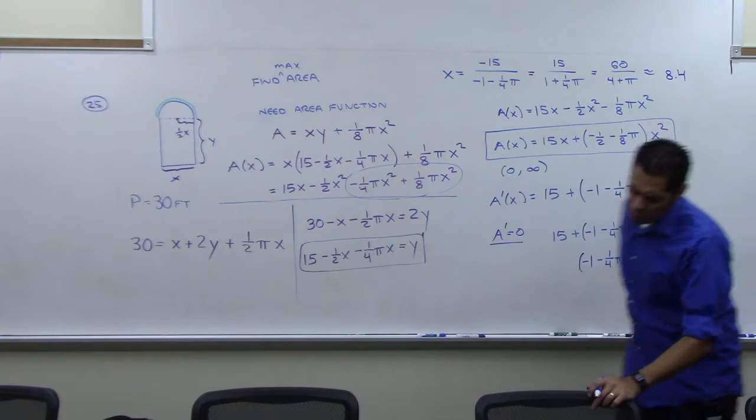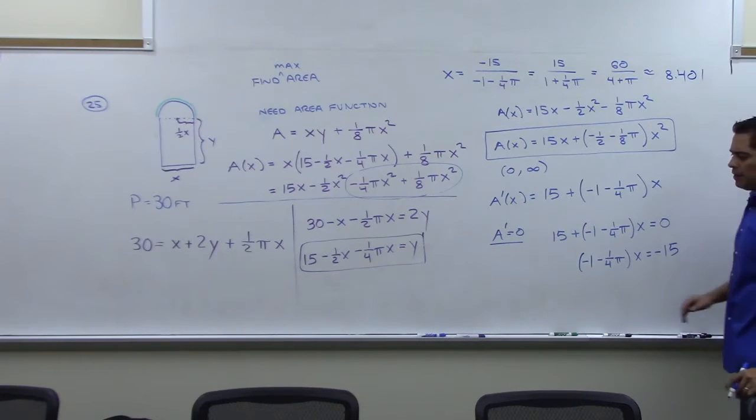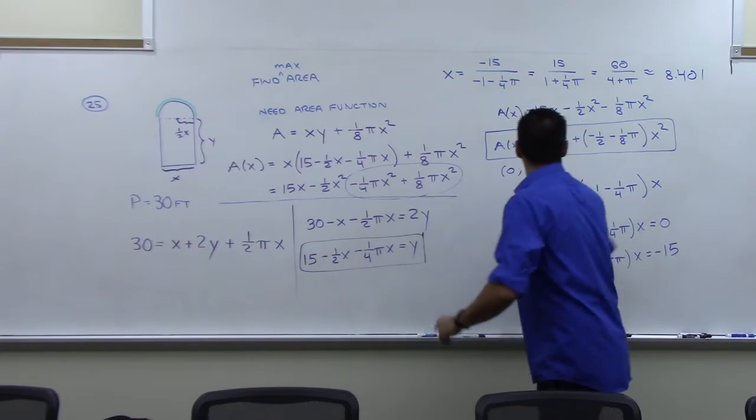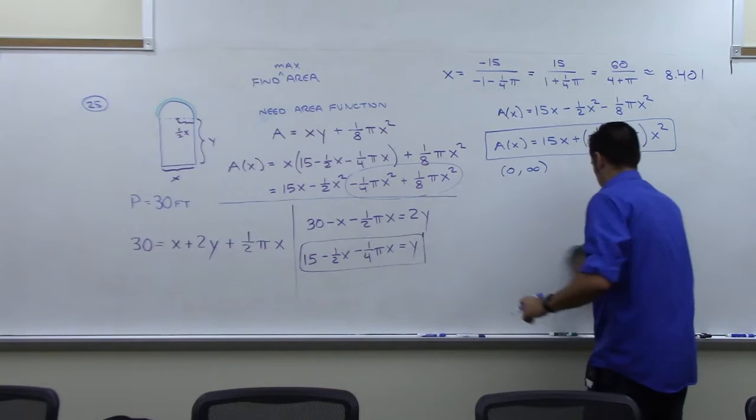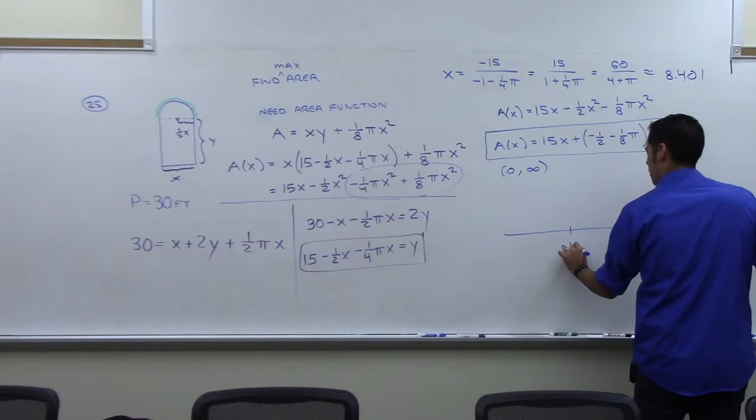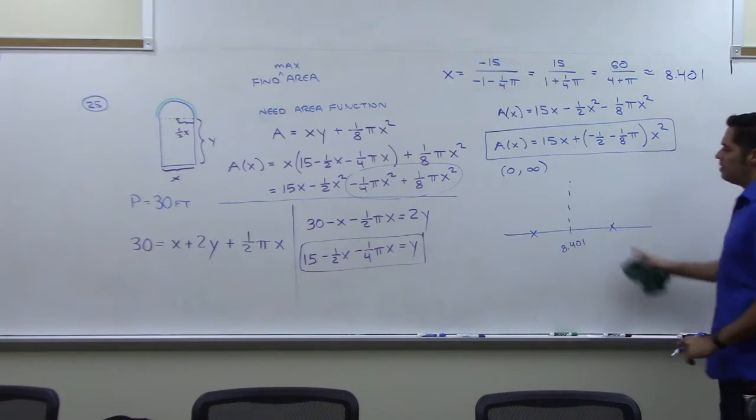All right. 8.401. And that's the only critical number I have. So if I go to a number line now and put 8.401 and pick some test points and plug these into the derivative,